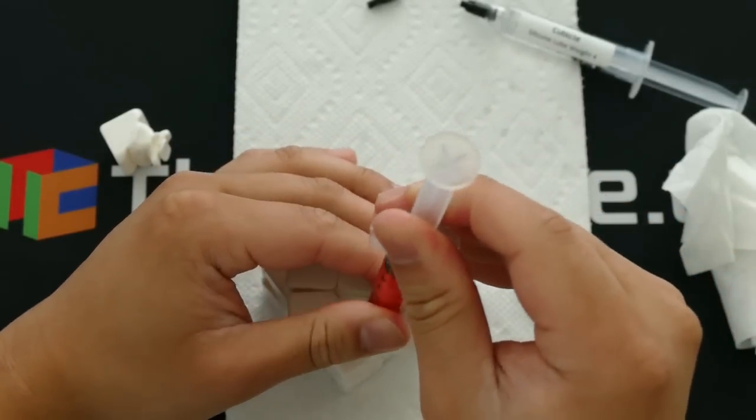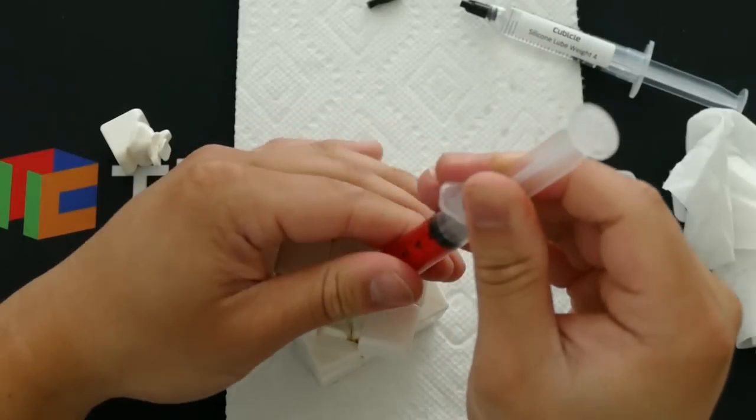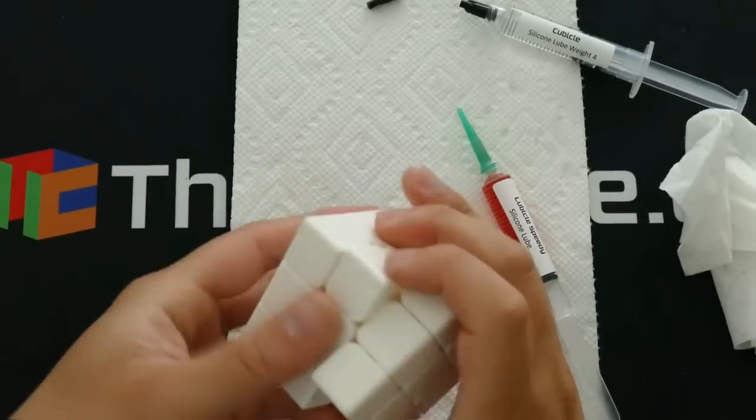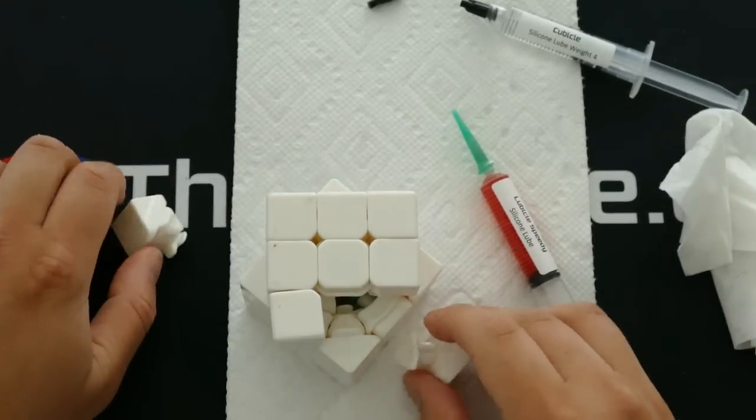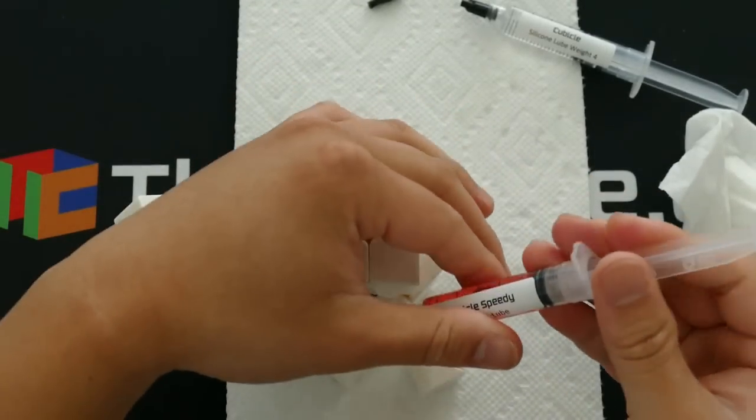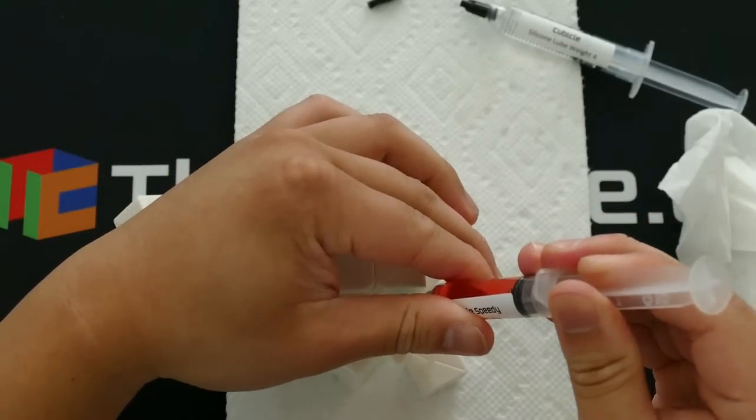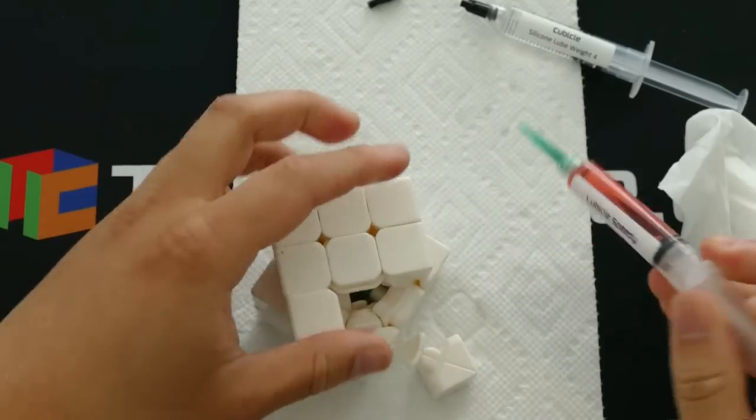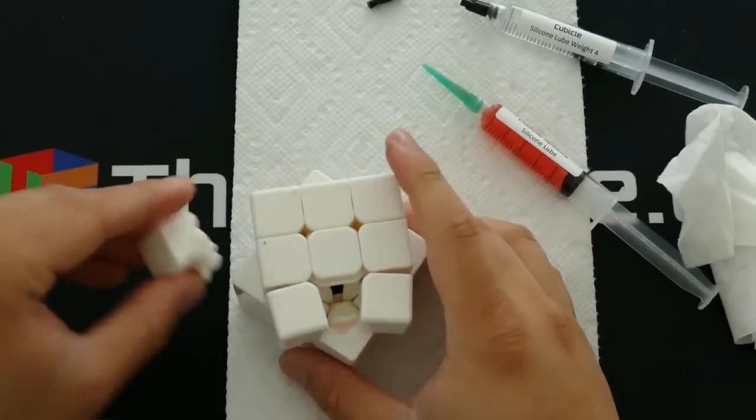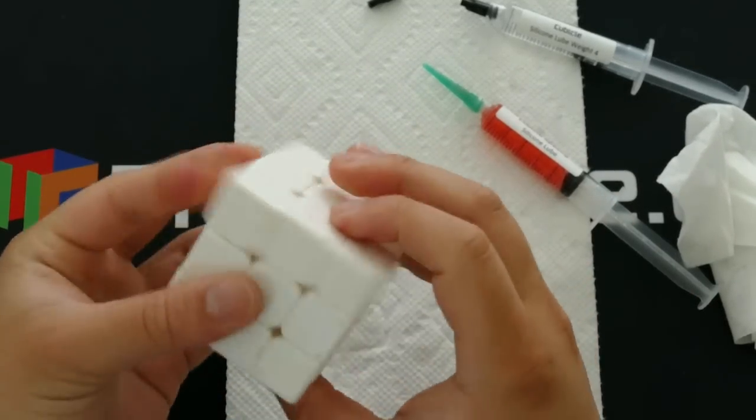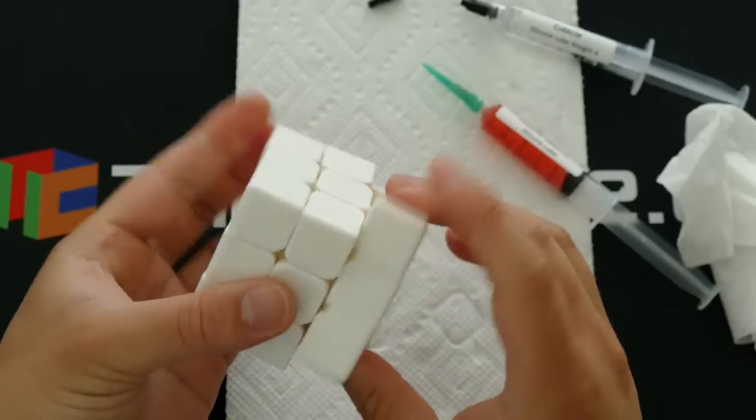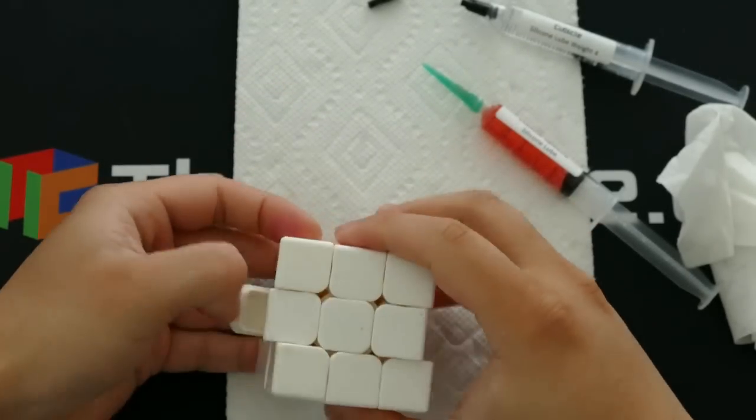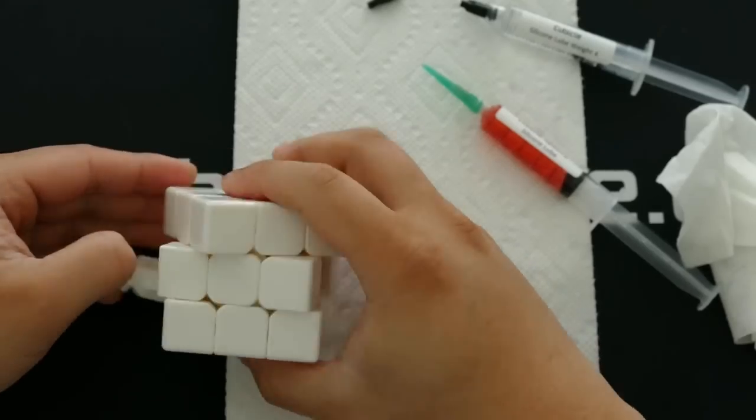And when you lube the core you want to use a gel-like substance so like weight four, weight five so that the lube stays there and doesn't disperse. And for the pieces it all depends on what you prefer. So over here we're using Speedy because the cube has a lot of surface to surface contact and so Speedy really makes it soft and fast and it's a really nice feeling at least to me. And so that's why I really like Speedy. But if you do prefer a more controlled feel you can use heavier lube on the pieces as well.